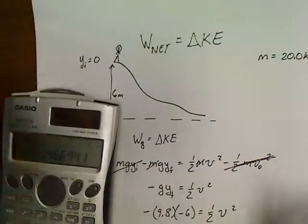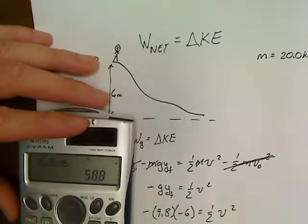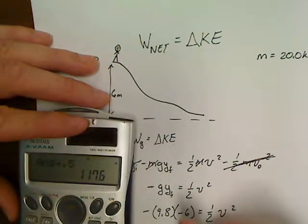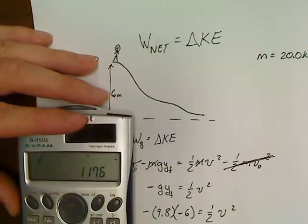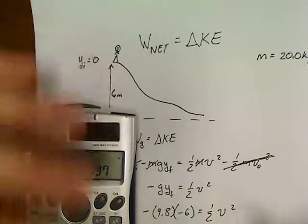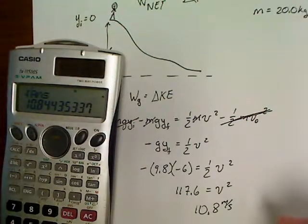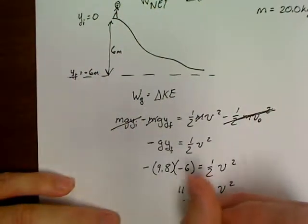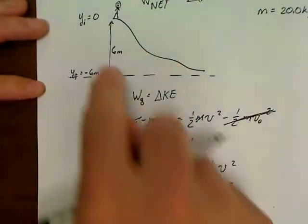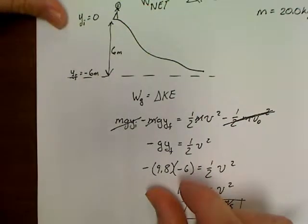The answer should be 10.8 m/s. Calculating: 9.8 times 6 — negatives cancel — gives 58.8. Dividing by one-half (multiplying by 2) gives 117.6 equals v². Taking the square root gives 10.8 meters per second. So in the perfect frictionless world, this child reaches the bottom at 10.8 meters per second.